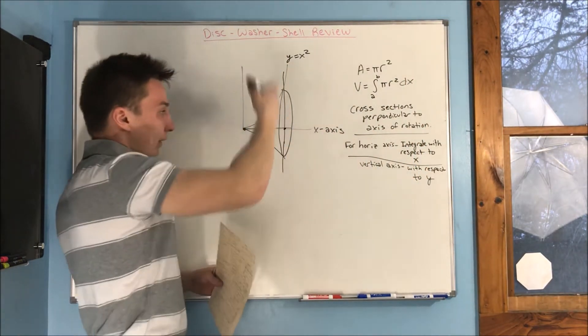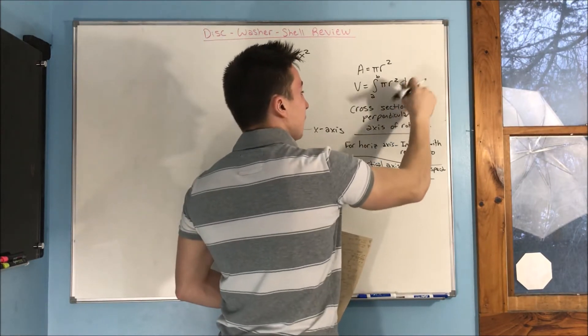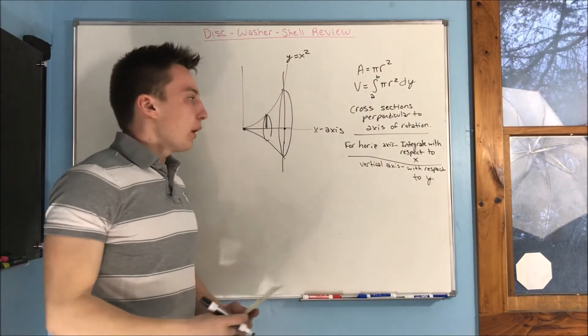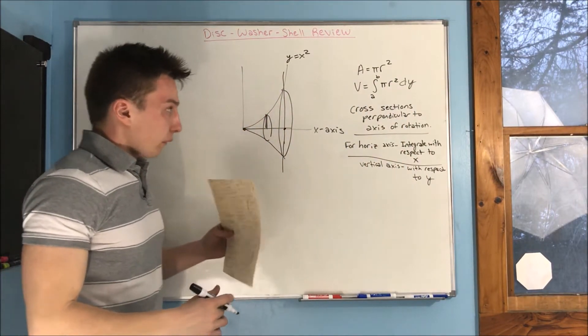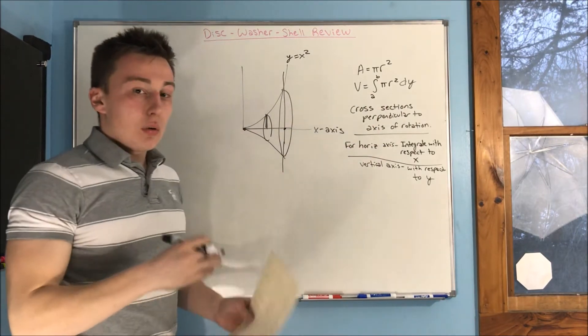If we have a vertical axis, so we have an axis straight up and down like the y-axis, we're going to be getting a dy here, and this radius is going to be in terms of y. So this also, all this, is the same for washer method.